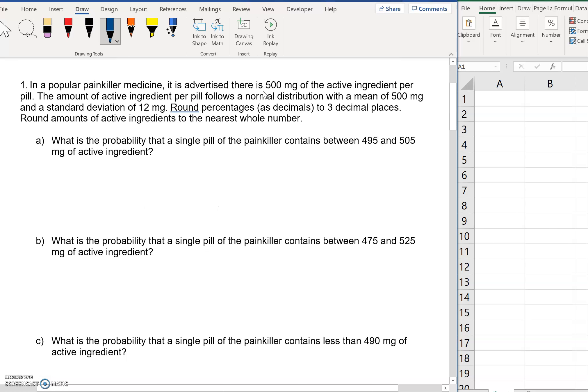In the first one, I'm not going to read through this. We've already looked at everything. But basically, the key pieces of information are we have a mean of 500 milligrams and a standard deviation of 12 milligrams. So that's what we're going to use to find all of these. And remember, this is a little different from the empirical rule, the 68, 95, 99.7, because we don't need to be exactly one, two, or three standard deviations in either direction.